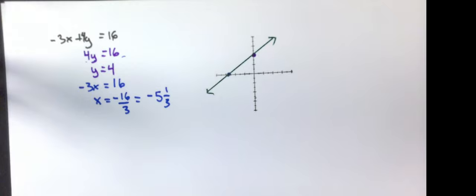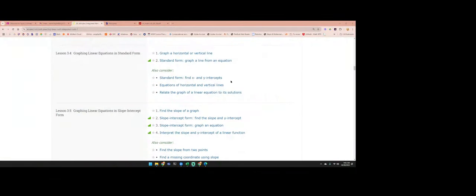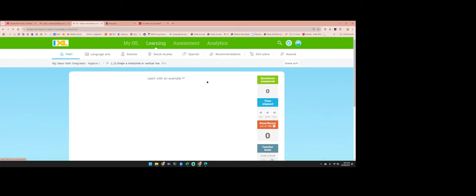What I'm going to do now is we're going to go to the iXLs. I'm going to do some examples directly from your iXL. Graph a horizontal or vertical lines. First one, graph the equation X equals negative 9. So there we go. Vertical line at negative 9.